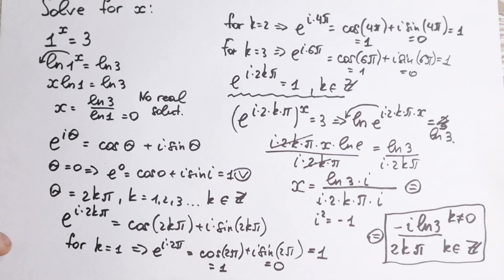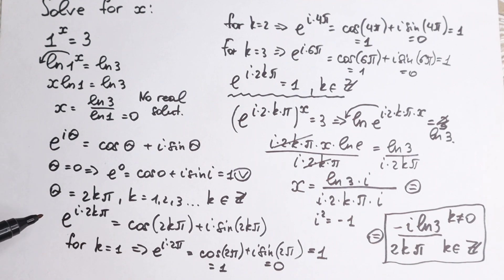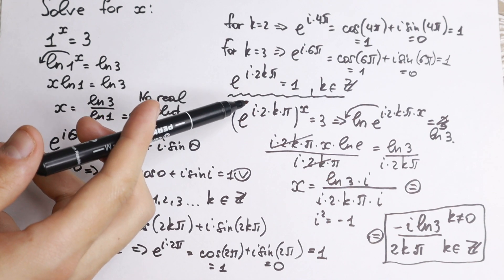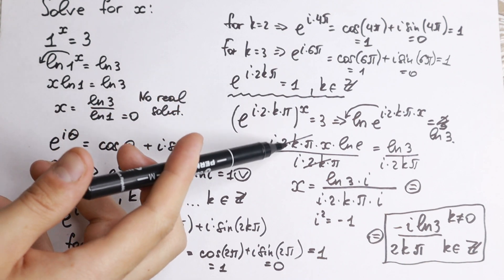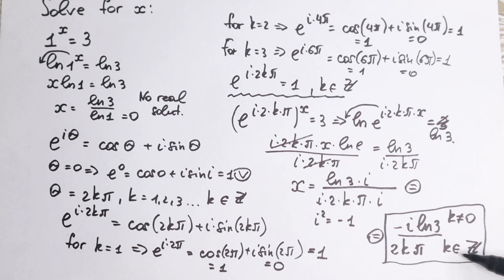I hope you understand this explanation. If you don't, write your question in a comment — it's a really interesting problem. As you can see, in the beginning we have no real roots. The first step showed that, and the second step used Euler's identity. When we check k equal to 1, 2, and 3, we always get 1 on the right-hand side, so we can substitute that expression. K needs to be a non-zero integer for this to work — that's my approach. Write your suggestions in the comments. Please support the channel with a like, I really appreciate it. See you in the next videos!